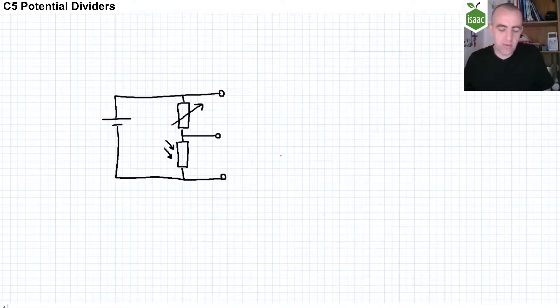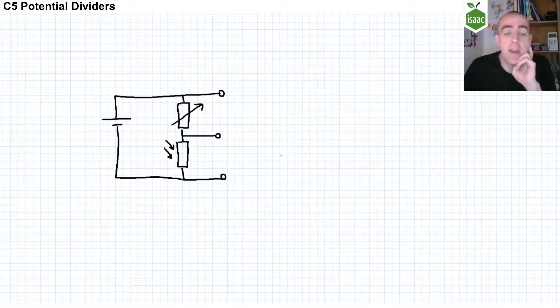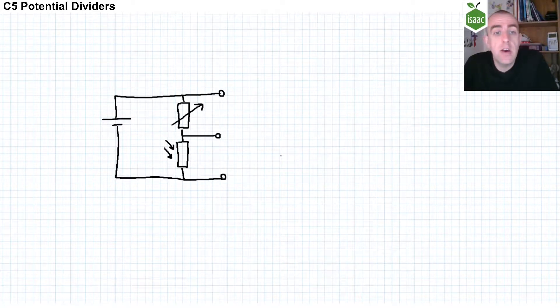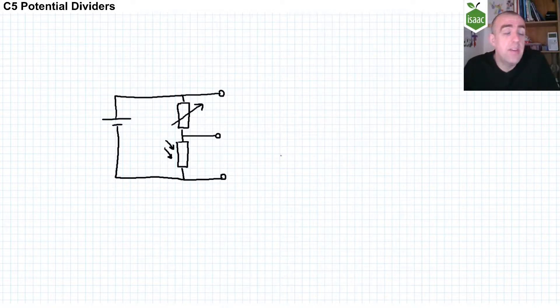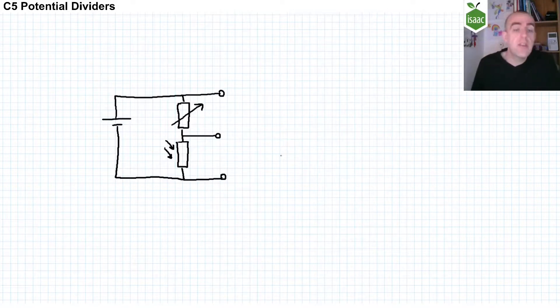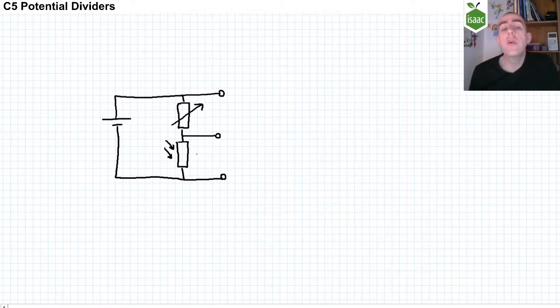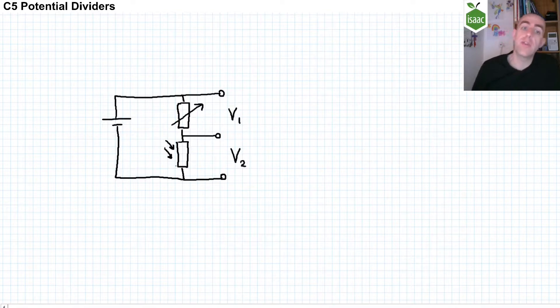You'll commonly find potential dividers in sensing circuits like the one I've drawn here. In the circuit I've drawn here, I have a variable resistor on the top and an LDR on the bottom. The resistance of the LDR goes down as the light intensity goes up, and the resistance of the LDR goes up as the light intensity goes down. So as we are in a room that is getting darker, that means because the resistance of the LDR is increasing, so is the potential difference across that LDR. And so the potential difference across the variable resistor will drop as our room gets darker, because the potential difference across the LDR increases, because its resistance increases.